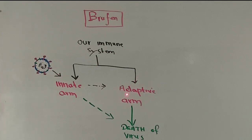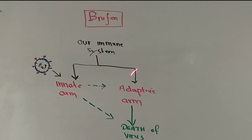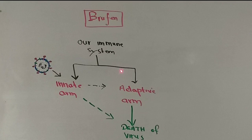As a result, after 7 to 10 days when the adaptive or acquired arm is ready to attack the virus, it faces a large number of the virus — a high viral load. So the adaptive arm produces a huge number of weapons, which in medical language we call cytokines. Because ibuprofen has weakened the innate arm, a large number of cytokines are produced. These cytokines not only try to attack the virus but also attack our own body, including the lungs.